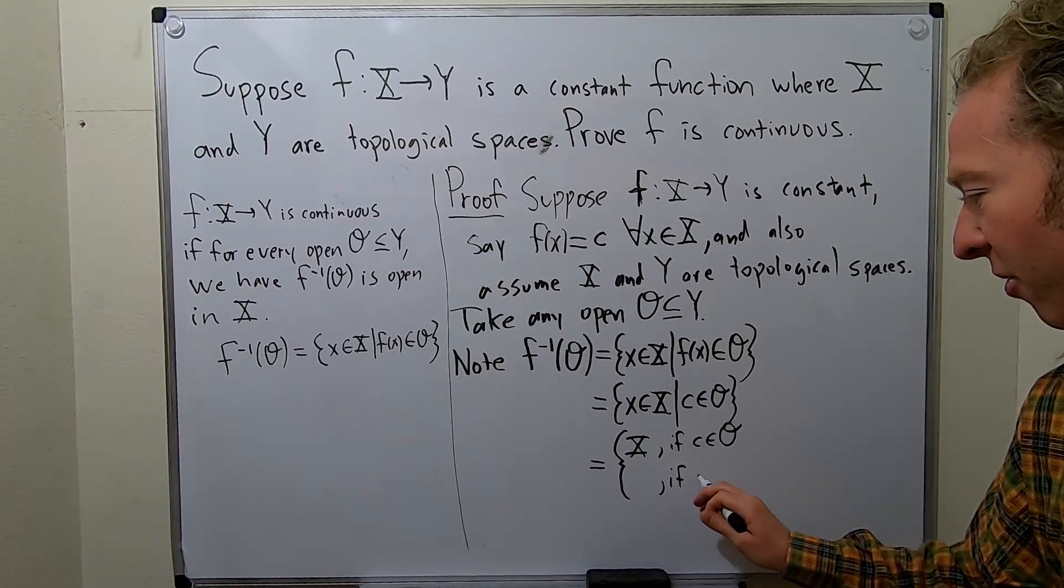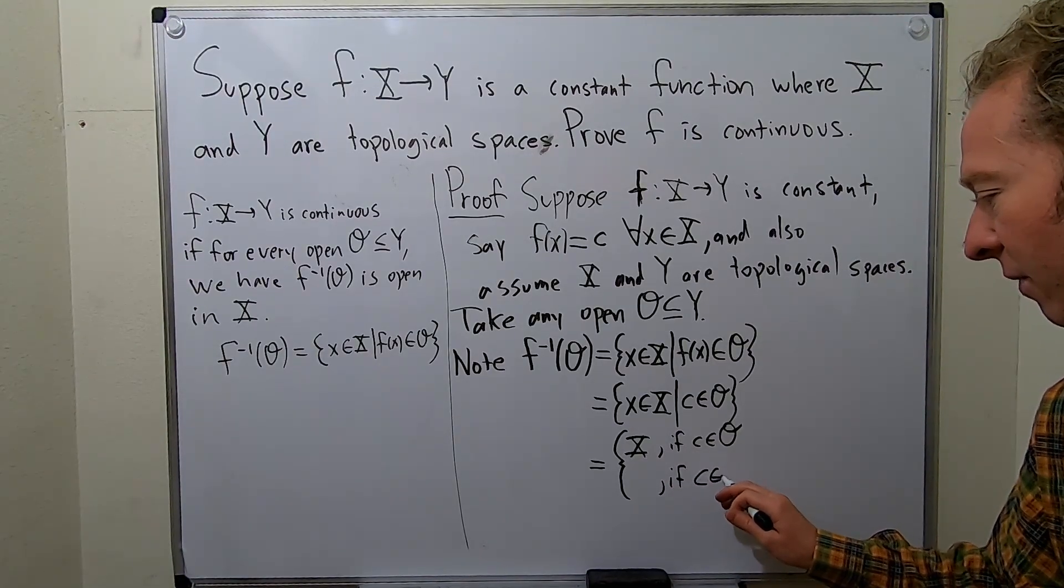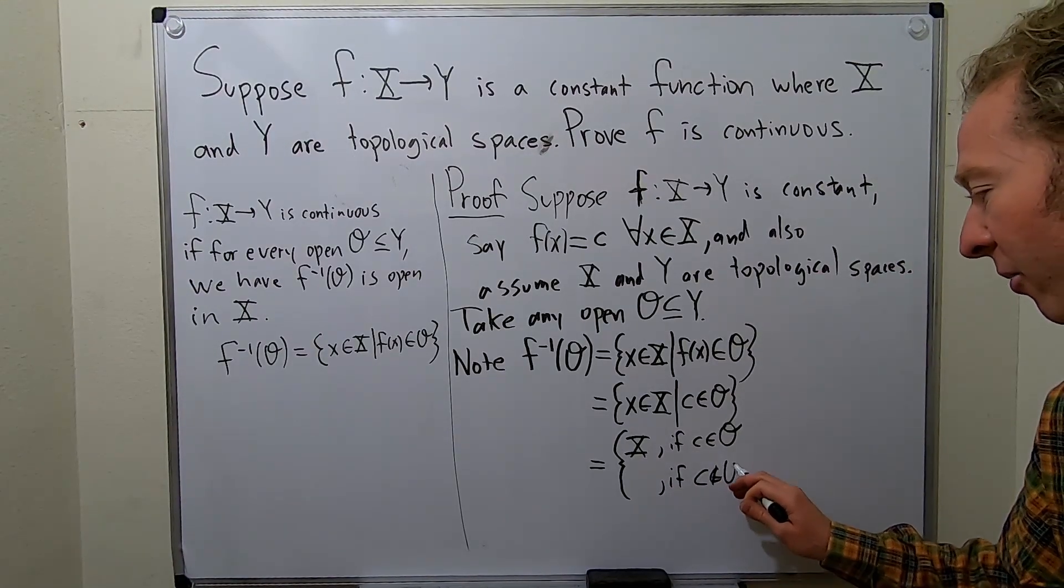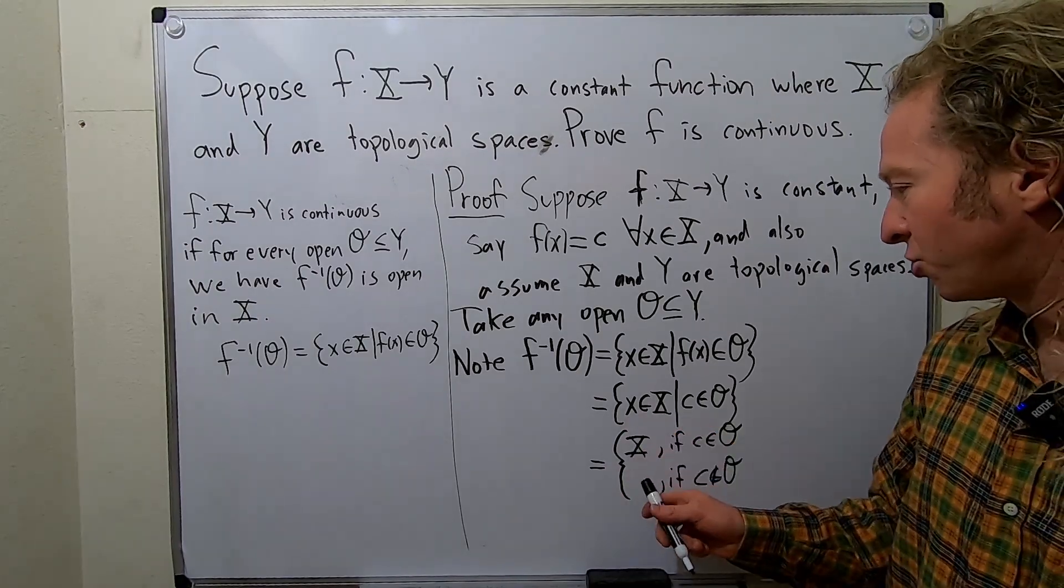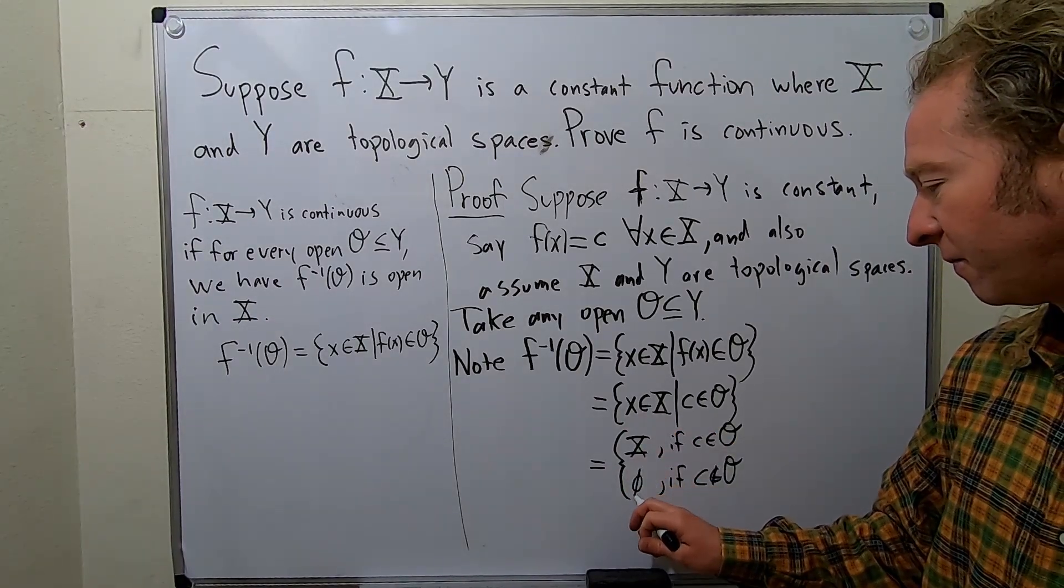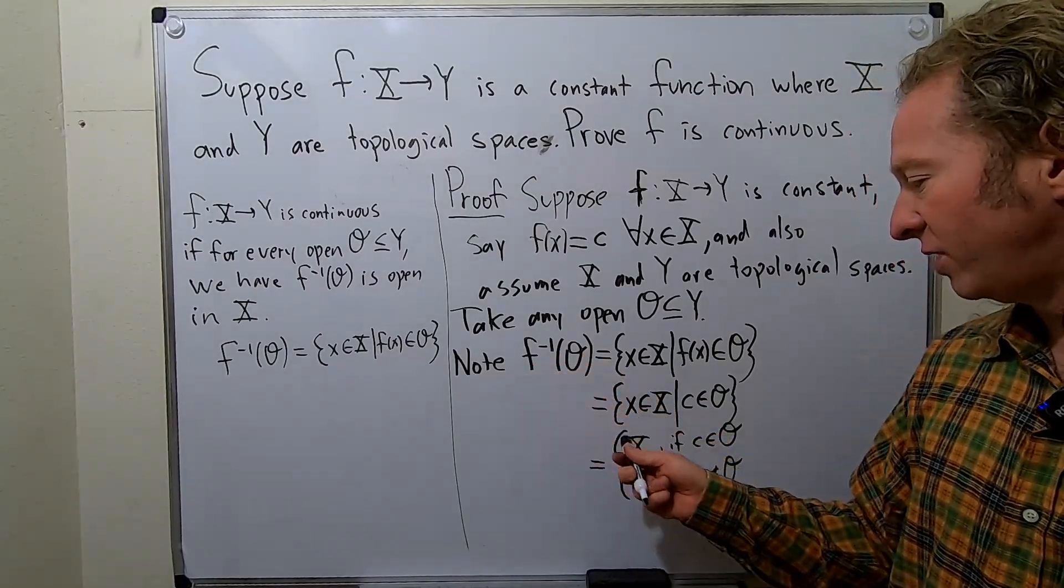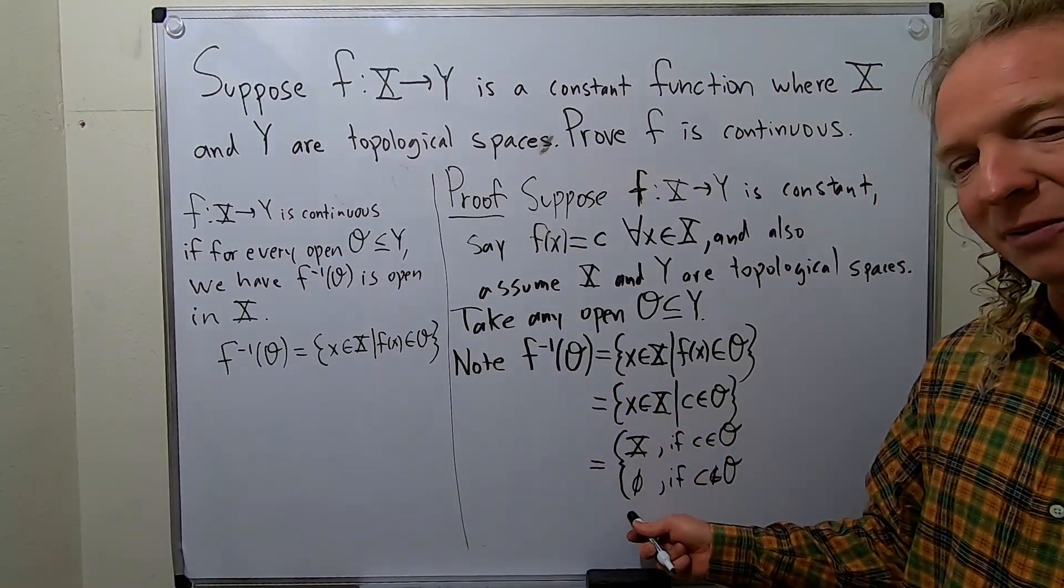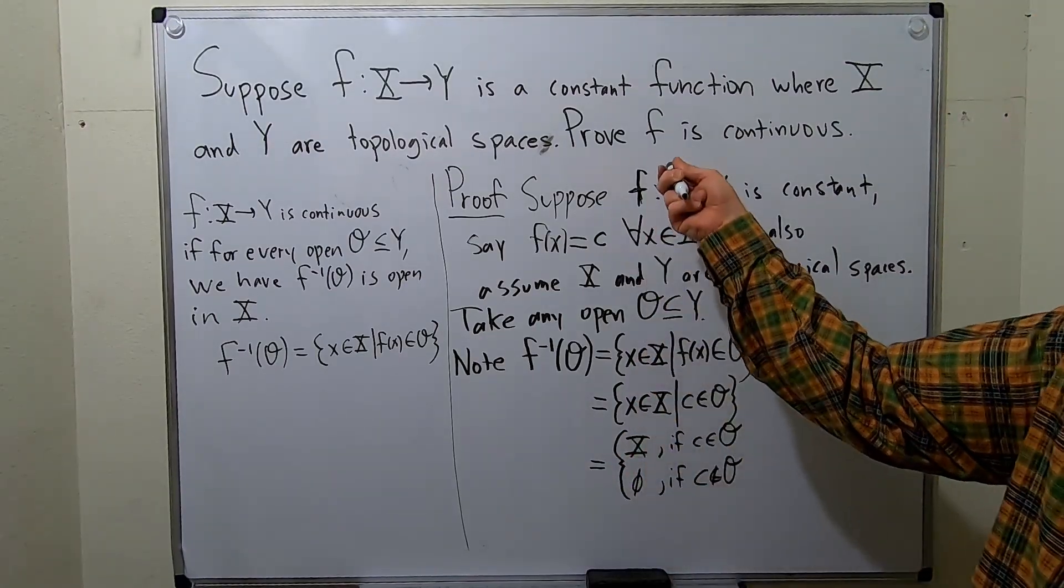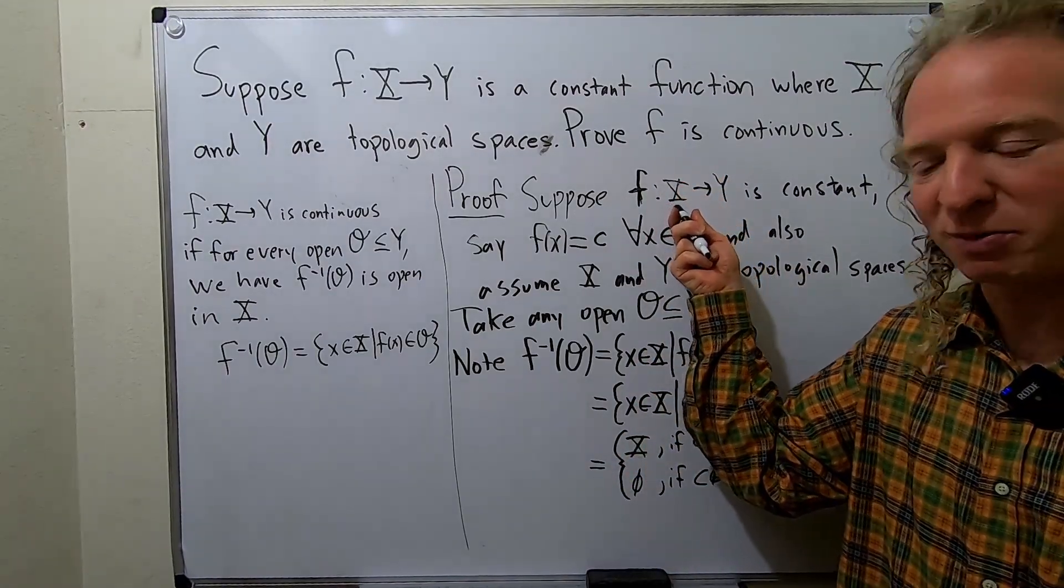If C is not in O, so if it's not an element in O, then this is never true. So this is the empty set. So the inverse image of O under F is either the entire space or the empty set, both of which are open in capital X because capital X is a topological space.